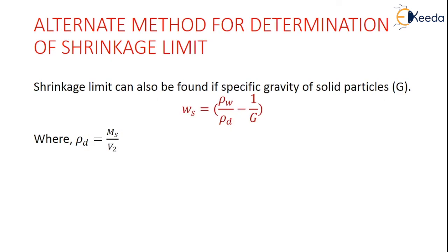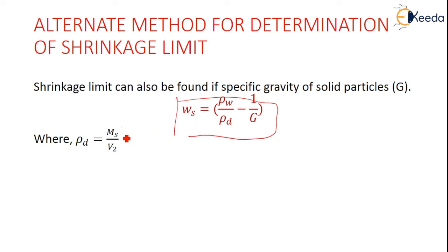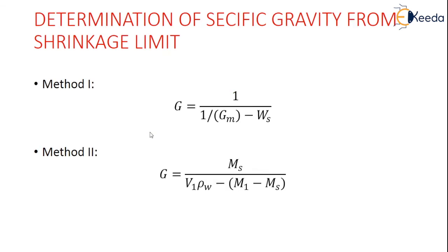The shrinkage limit can also be found if the specific gravity of the soil particles is known, using the formula ρw/ρd − 1/G, where ρd = Ms/V2. These are the different formulas used in method 1 and method 2 respectively.